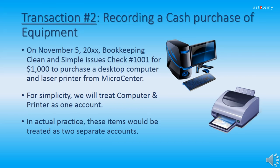Now we're ready for transaction two, where we record a cash purchase of equipment. On November 5, 20XX, Bookkeeping Clean and Simple issues check 1001 for $1,000 to purchase a desktop computer and laser printer from Micro Center. Note that for simplicity we will treat the computer and printer as one account, but in actual practice we would break these items out into two separate accounts.